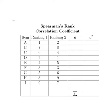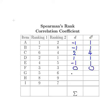We pick a direction and stick with it: ranking 1 minus ranking 2. So: 1 minus 2 = −1, squared = 1. 7 minus 8 = −1, squared = 1. 6 minus 4 = 2, squared = 4. 2 minus 1 = 1, squared = 1. 4 minus 5 = −1, squared = 1. 3 minus 3 = 0, squared = 0. 5 minus 6 = −1, squared = 1.